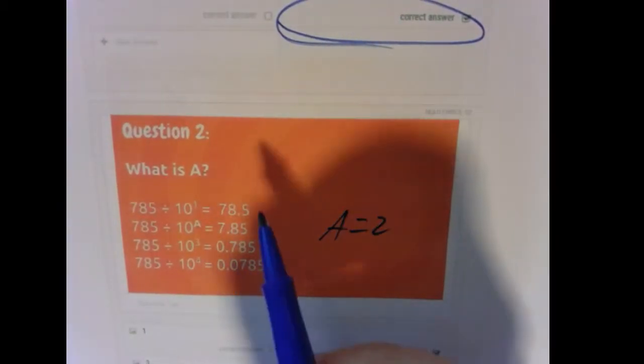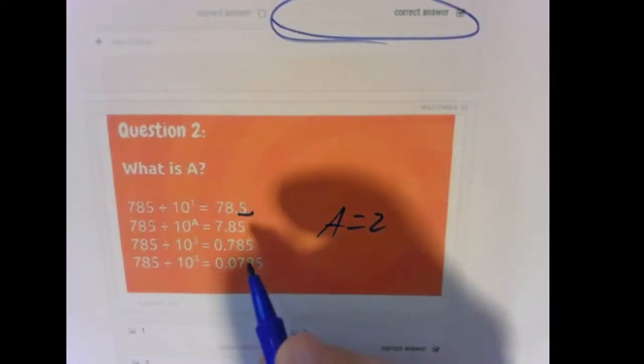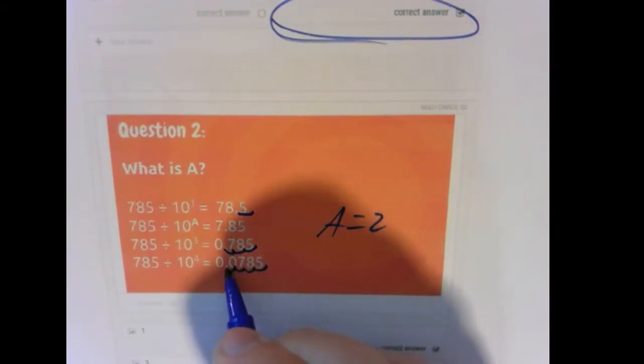But take a minute to think about it, right? So here we move the decimal one spot. Down here we moved it one, two, three spots. Here, one, two, three, four spots.